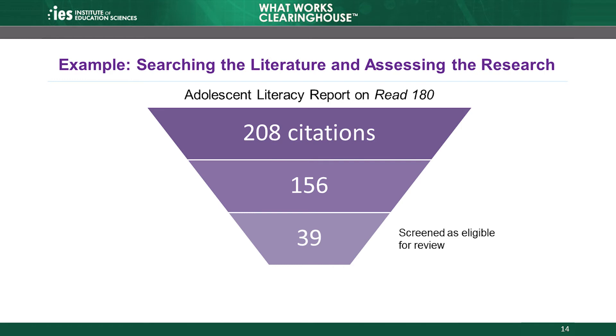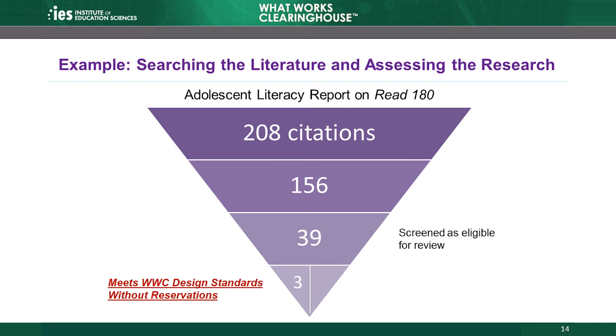Returning to our example, of the 39 studies screened as eligible for the Read 180 review, only 9 were rated meets WWC design standards. Three studies were rated meets WWC design standards without reservations, and 6 were rated meets WWC design standards with reservations. The inverted triangle in this example shows how few studies ultimately meet WWC design standards. The systematic review process starts with a broad, comprehensive literature search, but a smaller number of studies ultimately meet WWC design standards. The WWC's systematic review reports only on findings within this small group of studies.